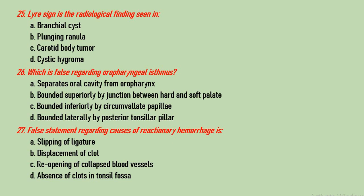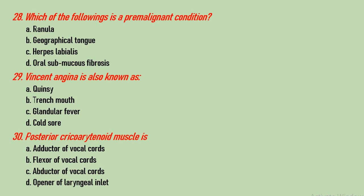Question number 27: the false statement regarding cause of reactionary post-tonsillectomy hemorrhage is which? Options are slippage of ligature, displacement of the clot, reopening of collapsed blood vessels, and absence of clots in the tonsillar fossa. Slippage of ligature, displacement of the clot, and reopening of collapsed blood vessels can all cause reactionary bleeding. Absence of clots in the fossa would not lead to reactionary hemorrhage. Question number 28: which of the following is a pre-malignant condition? Options are ranula, geographical tongue, herpes labialis, and oral submucous fibrosis. Oral submucous fibrosis is a pre-malignant condition. Ranula, geographical tongue, and herpes labialis are not pre-malignant conditions.